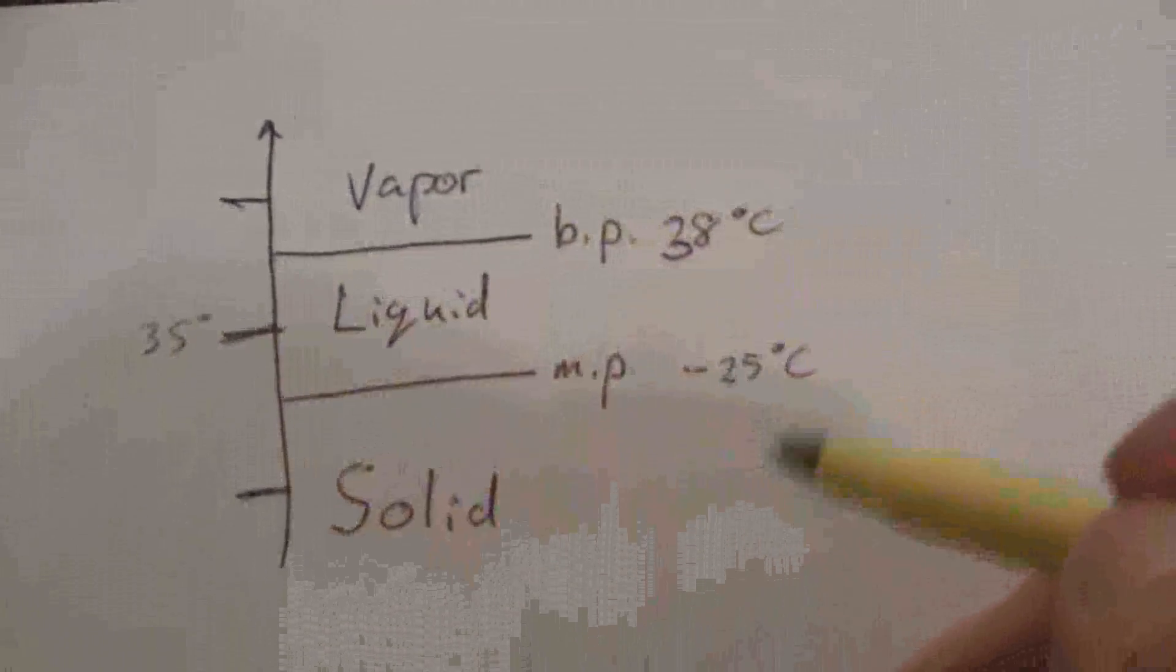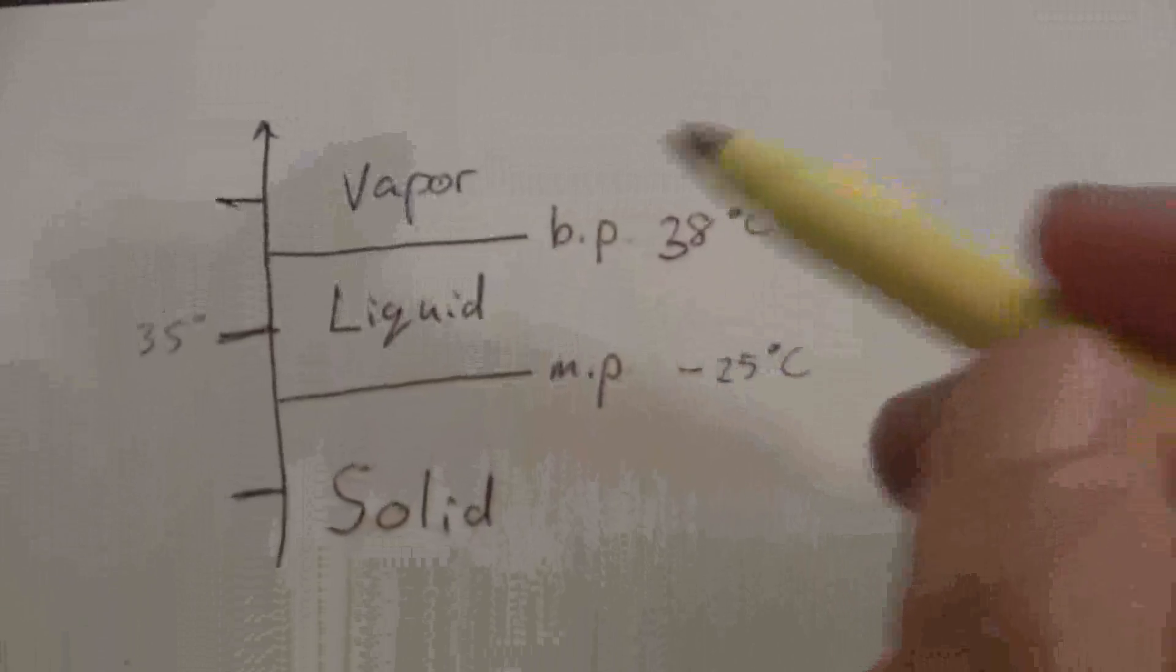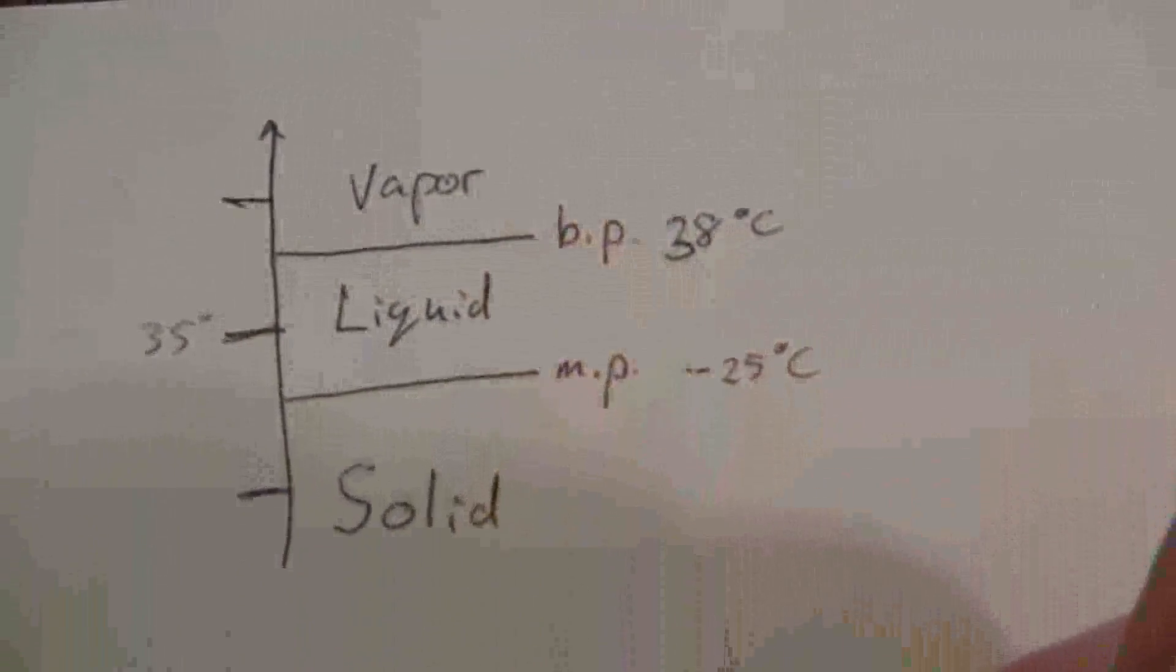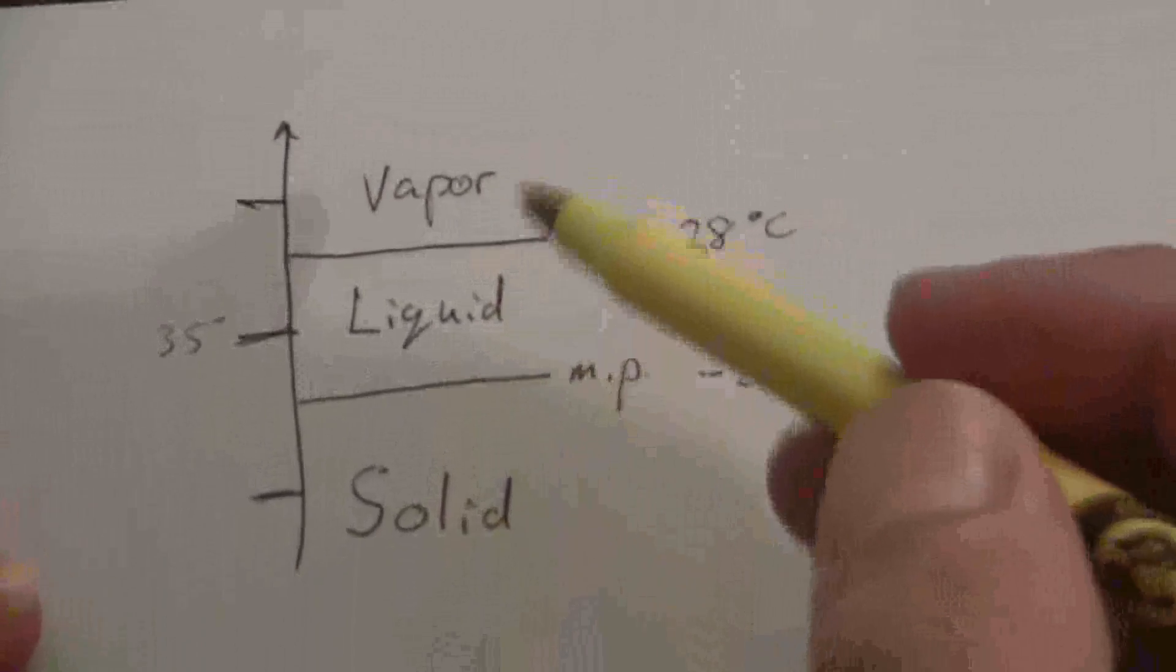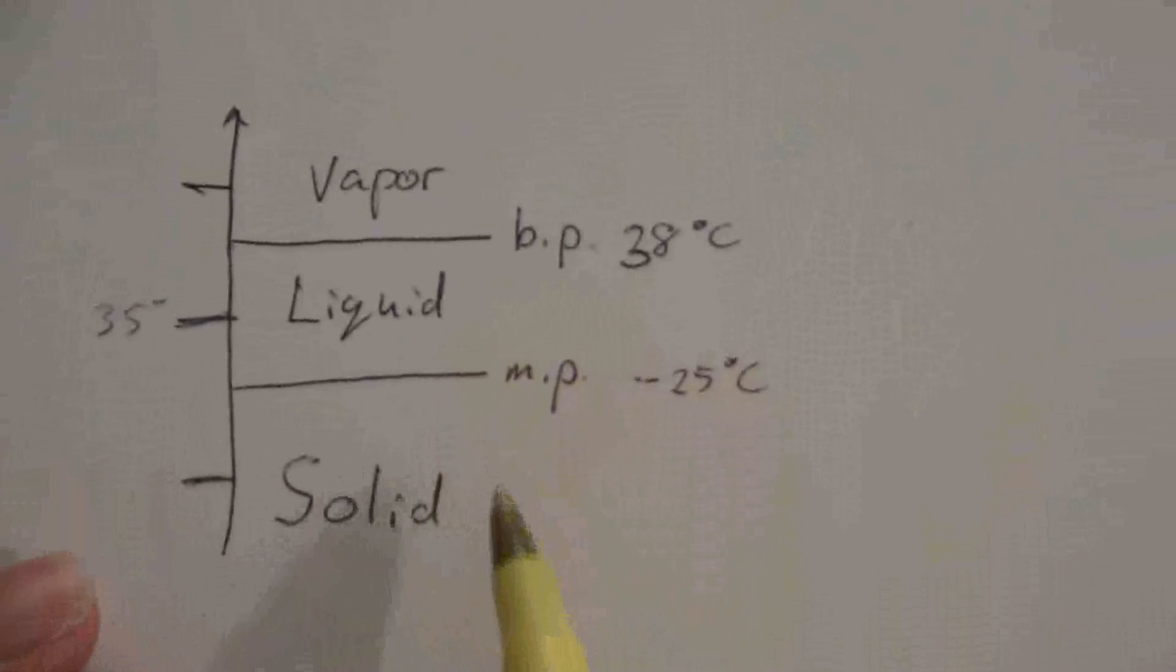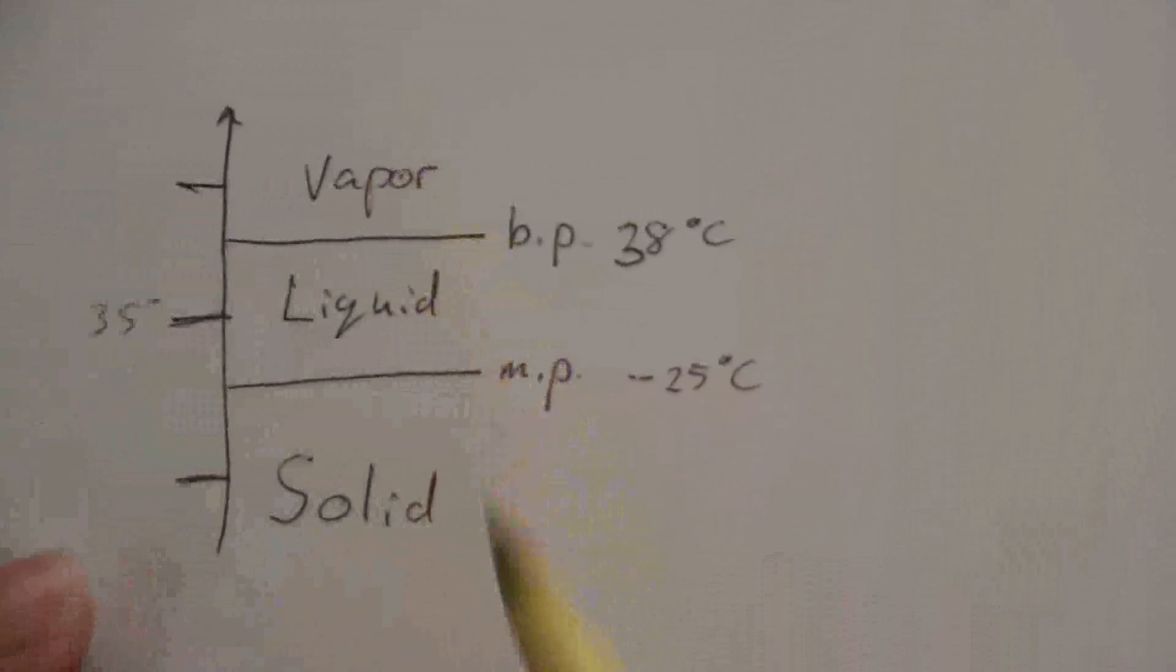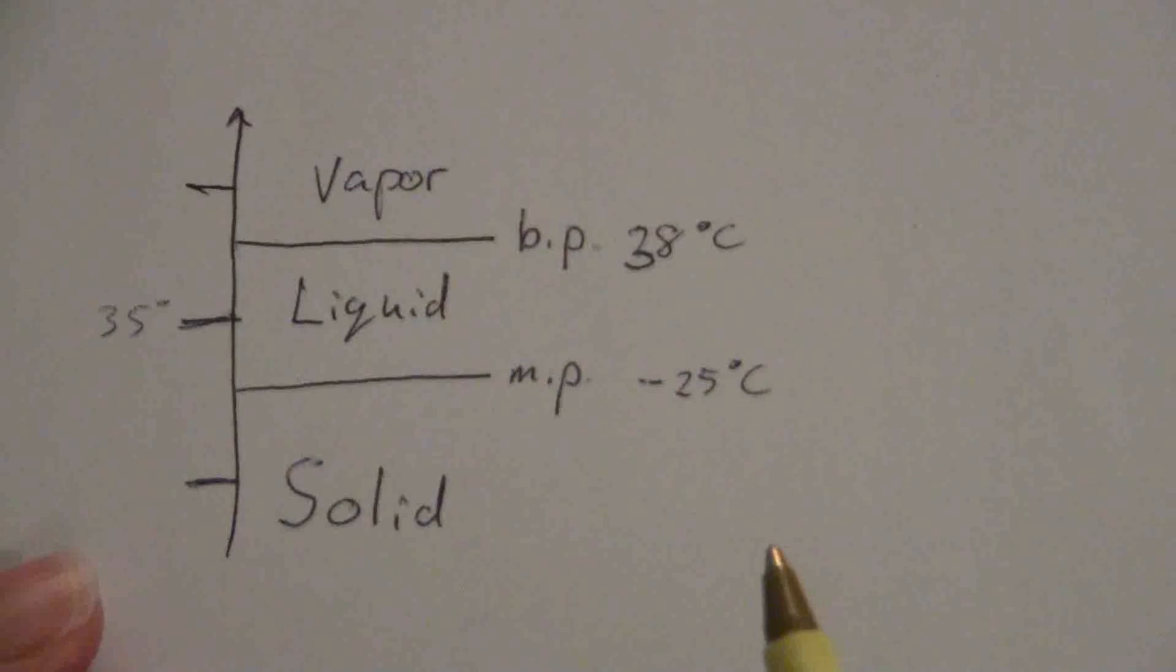So by looking at a table of melting points and boiling points and comparing that with a given temperature, you can identify what state of matter or what compounds in that table will be in a given state of matter. And just based on the fact that you're progressing from solid to liquid to vapor, that's the progression as you increase the temperature.